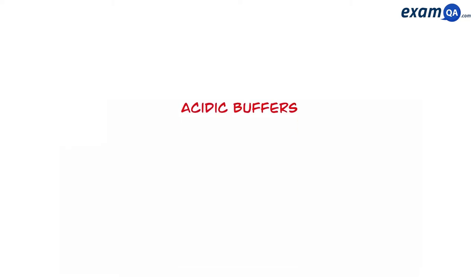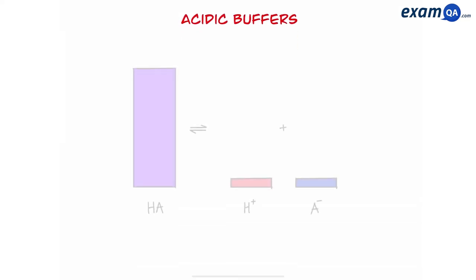In this video we're going to be learning about how to make acidic buffers. Now acidic buffers are derived from weak acids. As you can see, here's a weak acid and it shows us that a weak acid breaks down partially into H+ and A-.